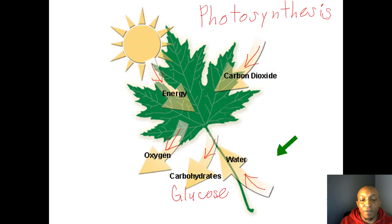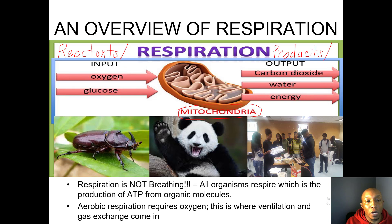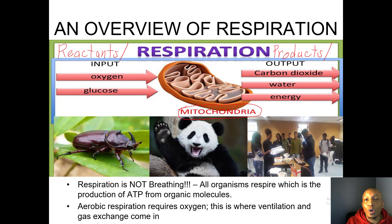Now let's look at an overview of respiration. Respiration occurs in the mitochondria of organisms. The reactants or inputs of respiration are oxygen and glucose, and the products or outputs are carbon dioxide, water, and energy. This is true for bugs, animals, and humans — all organisms go through the process of respiration. Respiration is not breathing; it is the production of ATP from organic molecules. Aerobic respiration requires oxygen, which is where ventilation and gas exchange come in.